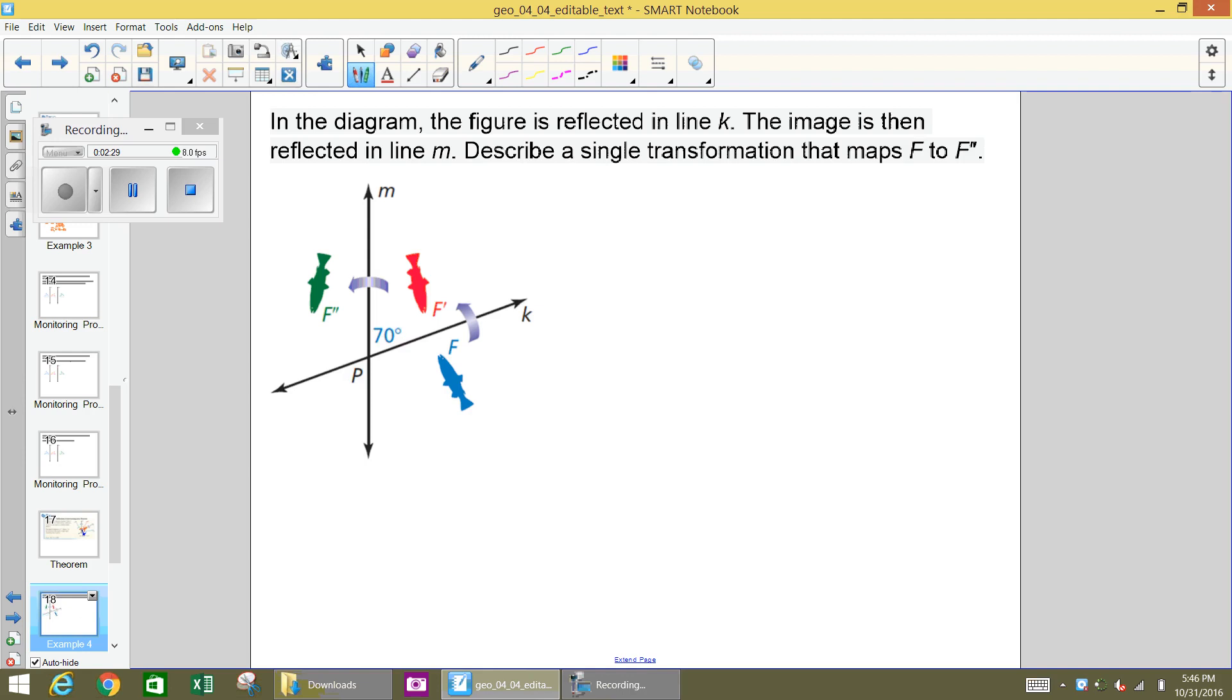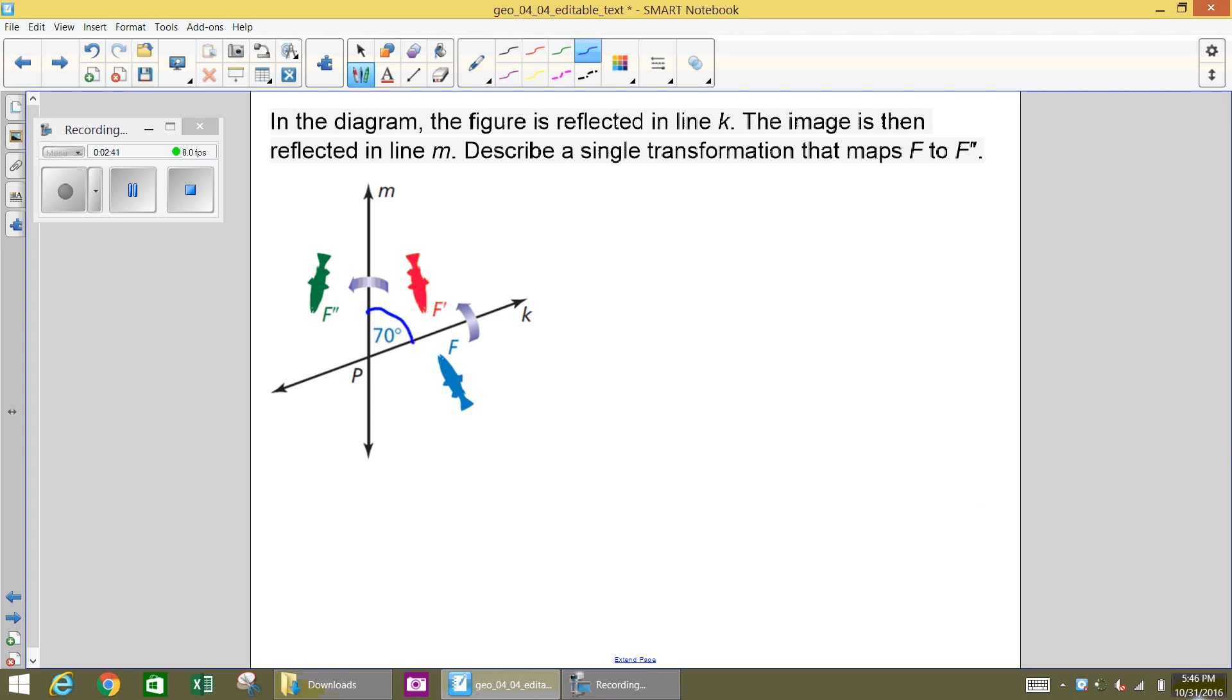Then the image is going to be reflected in line M. So that's what takes it from the red fish to the green fish. Or in other words, from F' to F''. Now the two lines intersect, and they form this 70-degree angle. And we know that we can take from F all the way to F'', and that's going to be 2X.